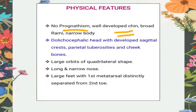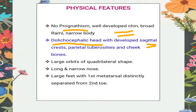There is no bulging out of the lower jaw in the Chancelade man. They have a very well-developed chin and broader rami, but the body is quite narrower. They also have a dolichocephalic head, which simply means that the length of the head is greater than its width. They have well-developed sagittal crests, which is a ridge of bone running lengthwise along the midline of the top of the skull.